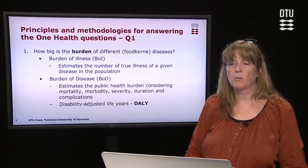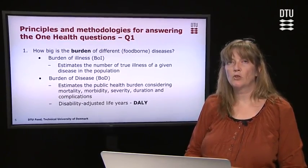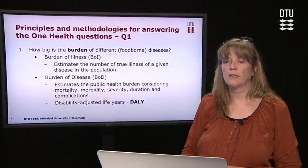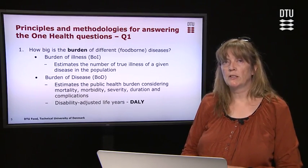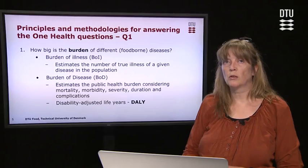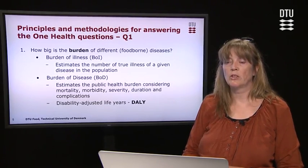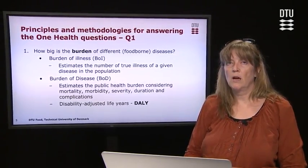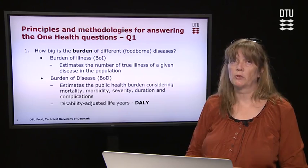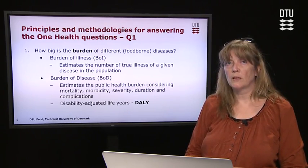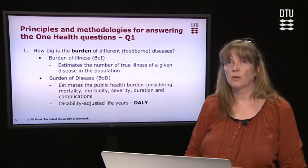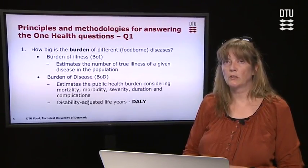In order to answer question number one, 'how big is the burden,' we have two methods: the burden of illness and the burden of disease. The burden of illness tries to estimate the true number of illnesses in a given population for a given disease, whereas burden of disease takes this estimate but also focuses on estimating the public health burden, considering mortality, severity, duration, and complications. This is varied between different diseases and not easily comparable if you just look at individual numbers. Therefore, a common effort has been made to develop a metric that summarizes all these things — it is called the Disability Adjusted Life Year, or DALY.